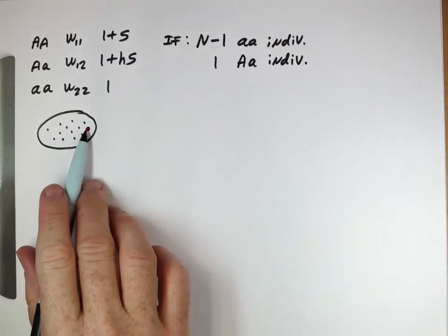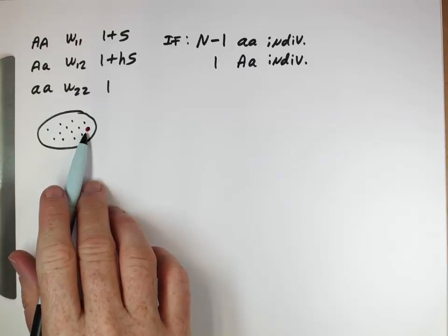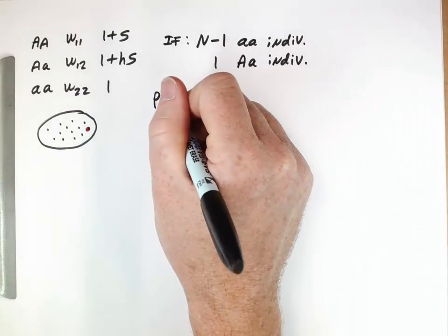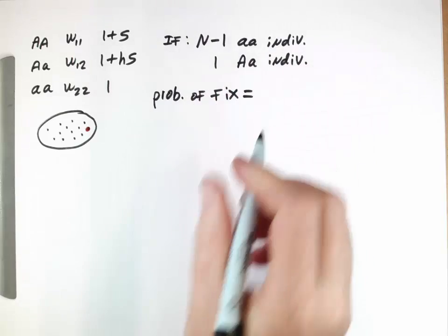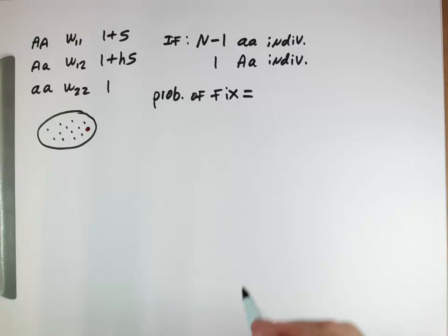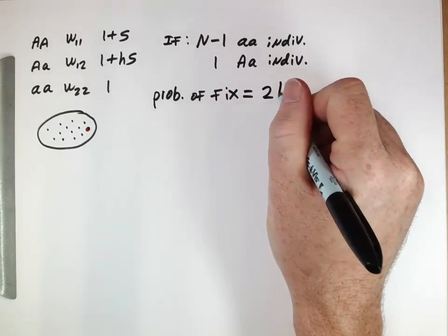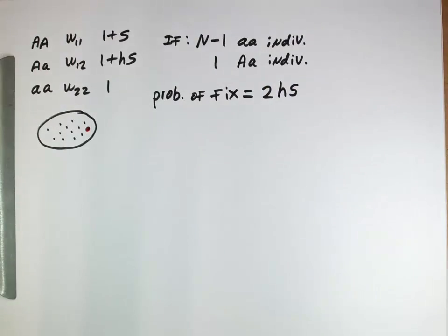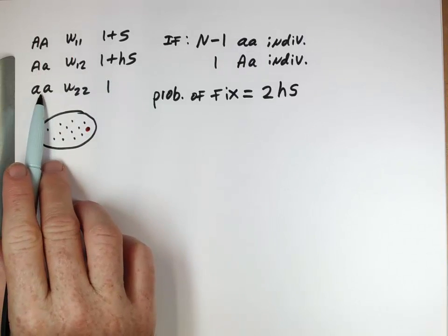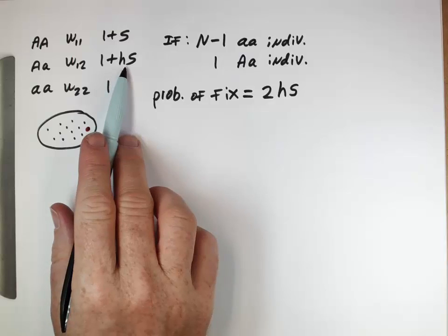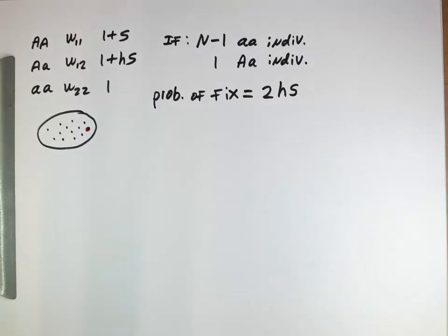What's the probability that this allele is the one that fixes? We're not going to do the derivation, but it turns out that probability is twice the heterozygote advantage. So this advantage here, the heterozygote has over these individuals. That hs term, twice that, is the probability of fixing.